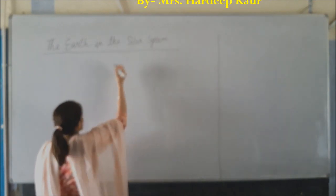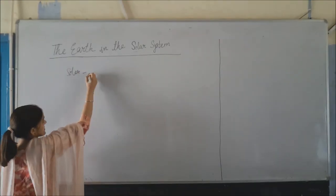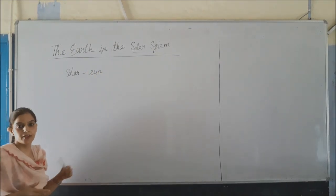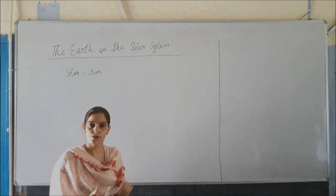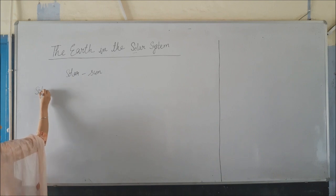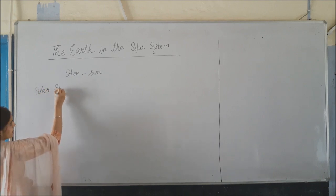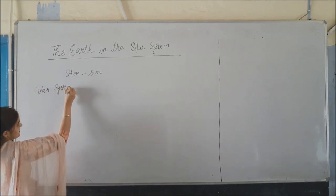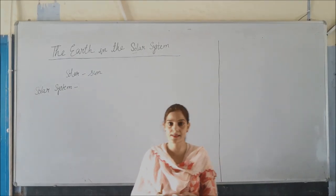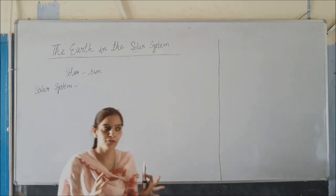What does the word solar mean first? Solar means something that is related to the sun, like solar energy. The energy that we get from the sun is known as solar energy. Now comes the solar system. Sun, moon, all the planets, satellites and celestial bodies — they form the solar system. All these things together form the solar system.